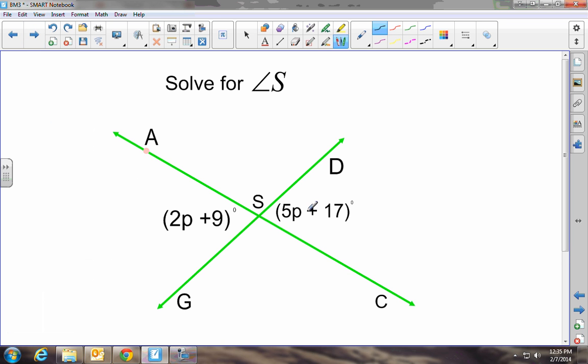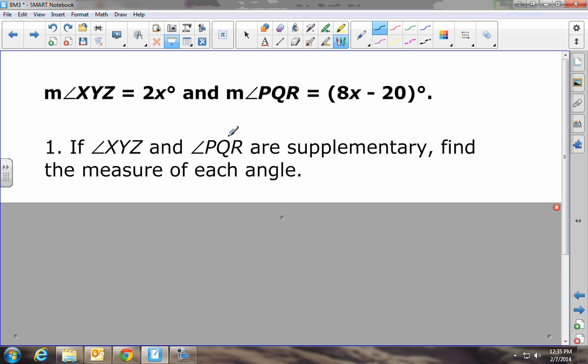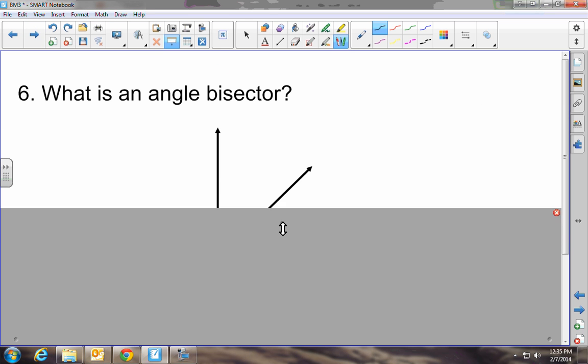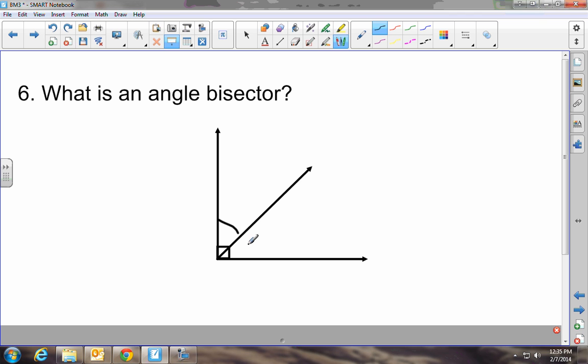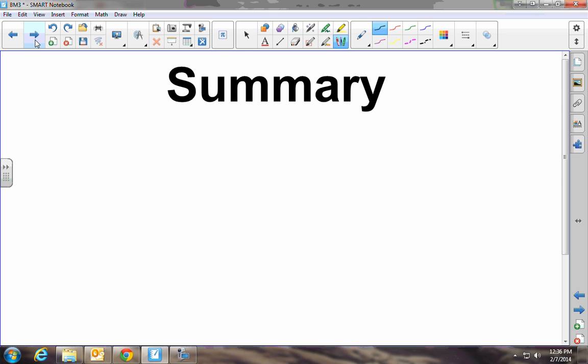Let's skip on ahead here. We've got a pair of vertical angles, set them equal to each other. Here we know that these angles are supplementary. So I already know that this angle plus this angle has to equal 180. Once I've set up the problem, it's just a simple algebra problem. We talked about an angle bisector, which means it cuts it in half, so this angle equals this angle. And let's just go ahead and skip to the summary here.